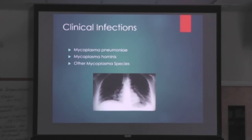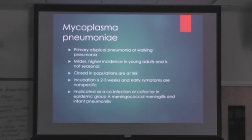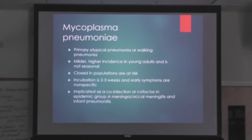So the three ways to differentiate it from Streptococcus pneumoniae: it's milder, not seasonal, and higher incidence in young adults. Also, closed-end populations are at risk — people in jails, prisoners, or students in dorm rooms have a higher risk for mycoplasmic pneumonia. Incubation is two to three weeks, and early symptoms are nonspecific, which is why people are walking around not knowing they have it.